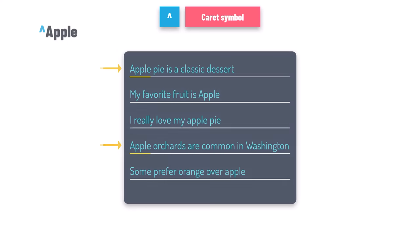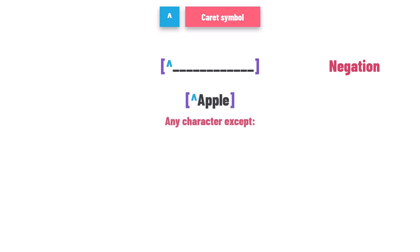There is a twist: the caret has a different role when placed inside square brackets. Inside a character class, caret means negation — it tells the regex engine to match any character except the ones listed. So [^apple] matches any single character that isn't A, P, L, or E. Placing caret outside brackets sets its role as a start-of-line sentinel, but inside brackets it transforms into a gatekeeper excluding specific characters.